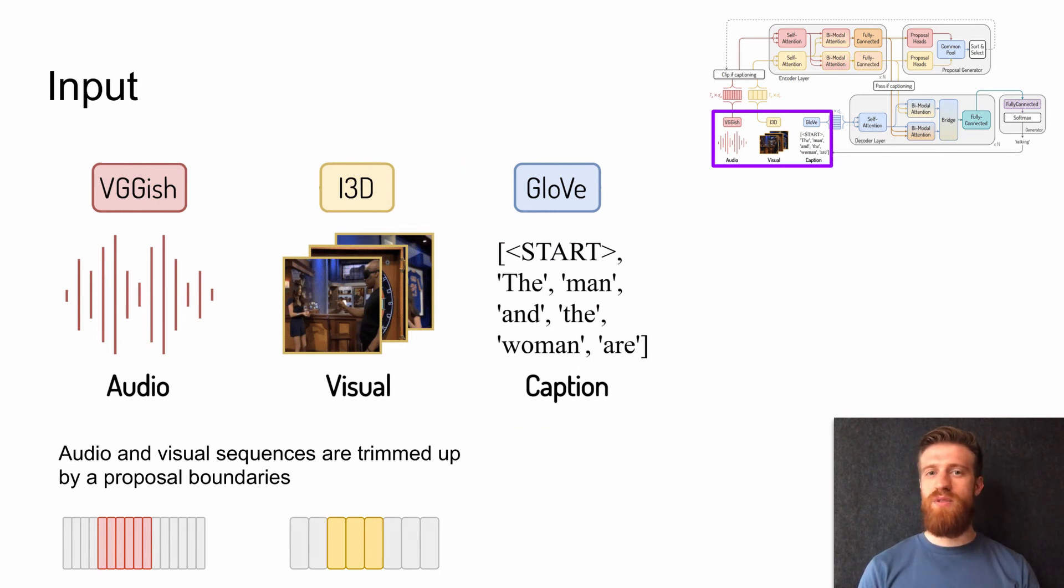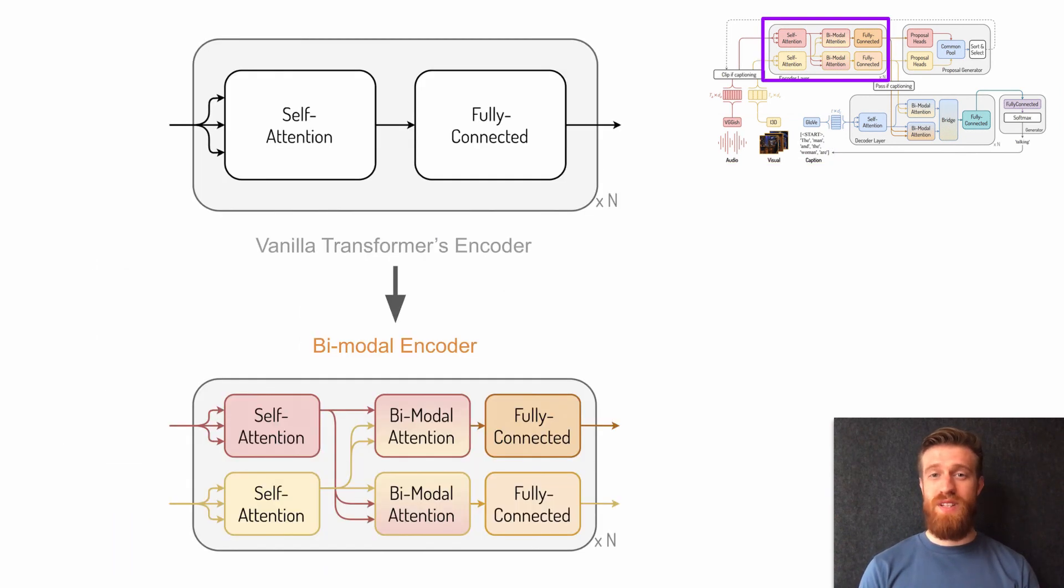Since dot product attention is position invariant, we add positional encoding to each input sequence. The design of the bimodal encoder is inspired by the original transformer encoder, and how the encoder information is used in the decoder. The bimodal encoder consists of three pairs of blocks: self-attention, bimodal attention, and position-wise fully-connected net. The self-attention allows the model to attend to all positions within one modality, while the bimodal attention attends to all positions in accompanying modality.